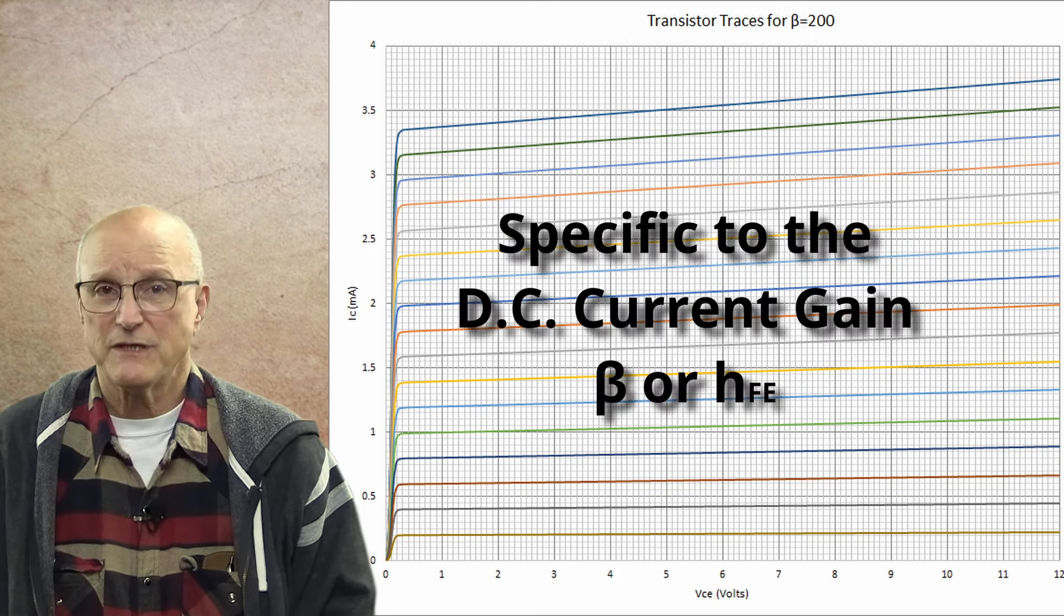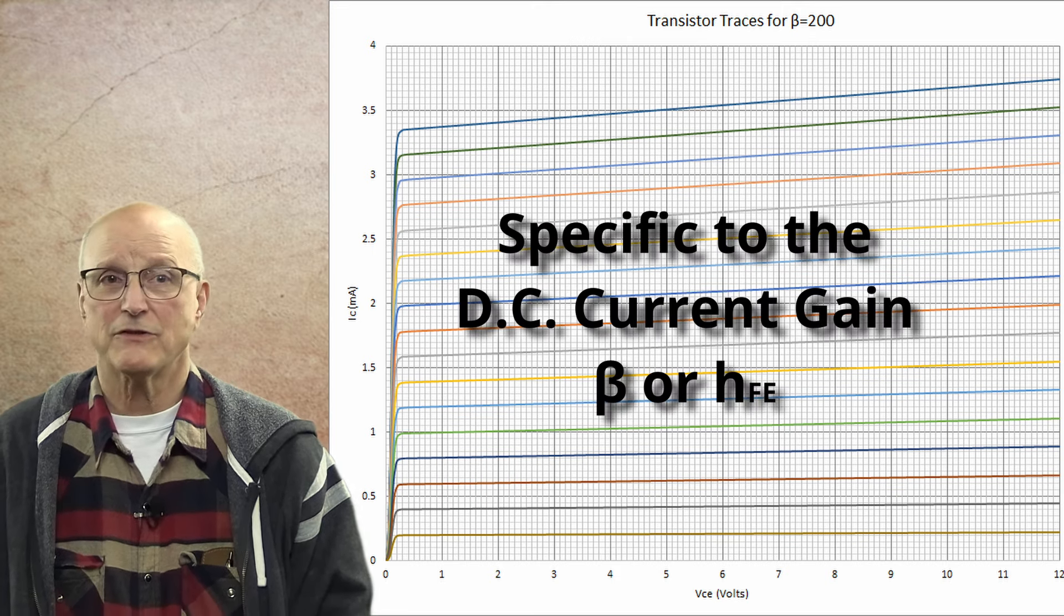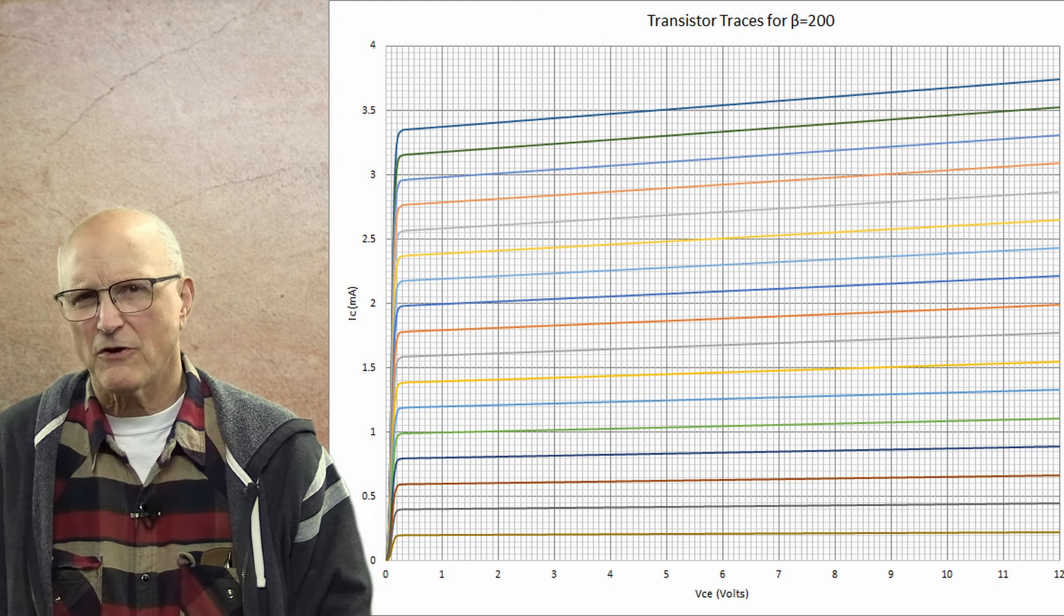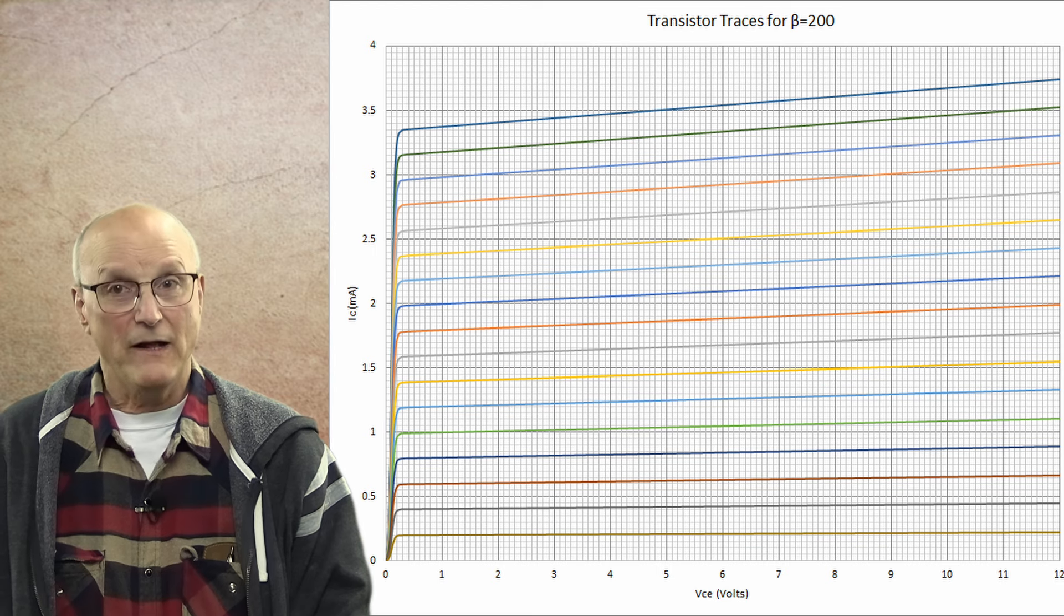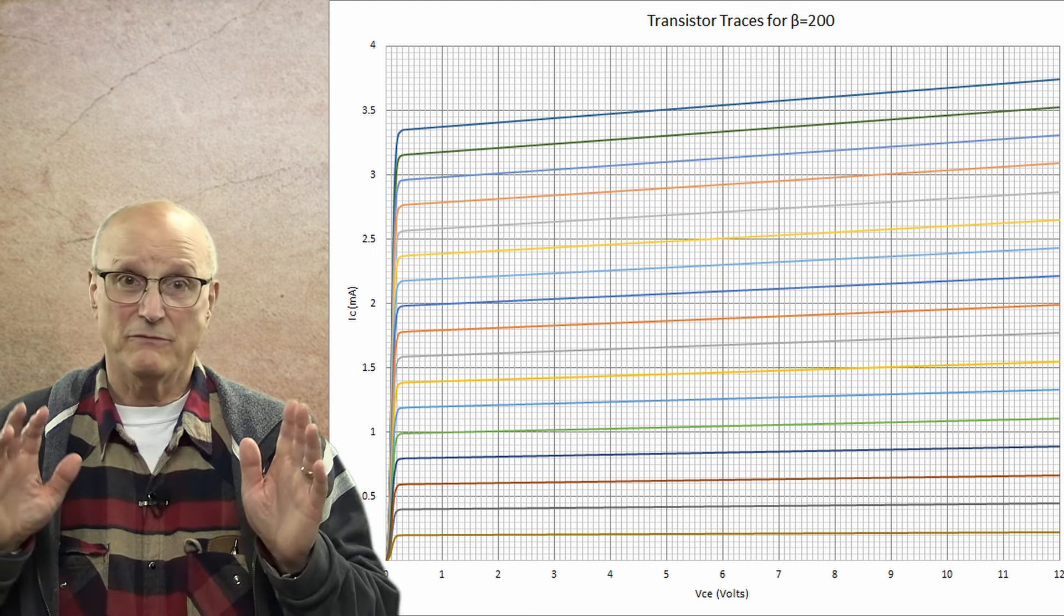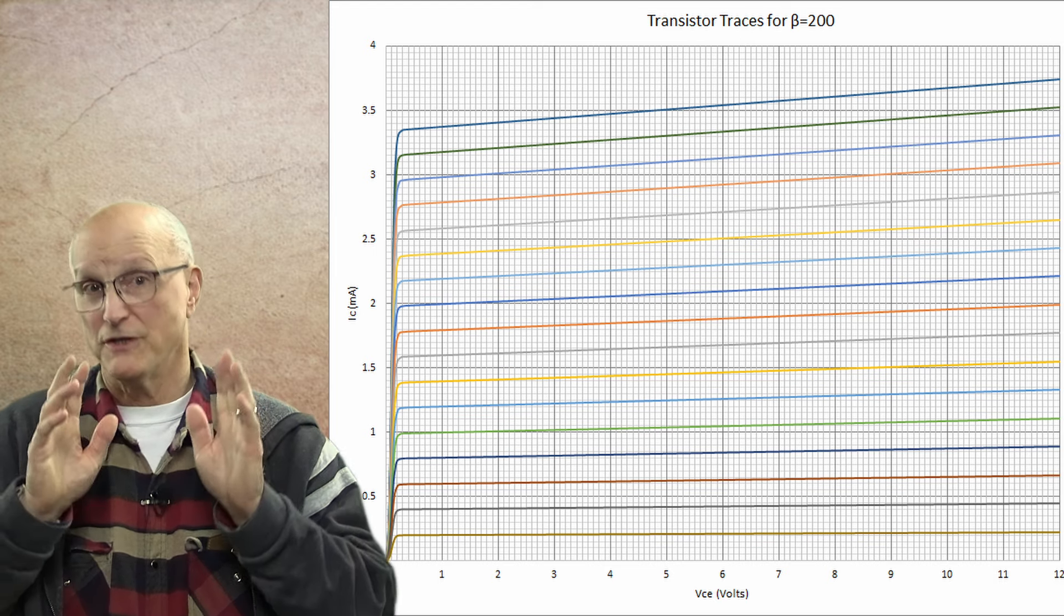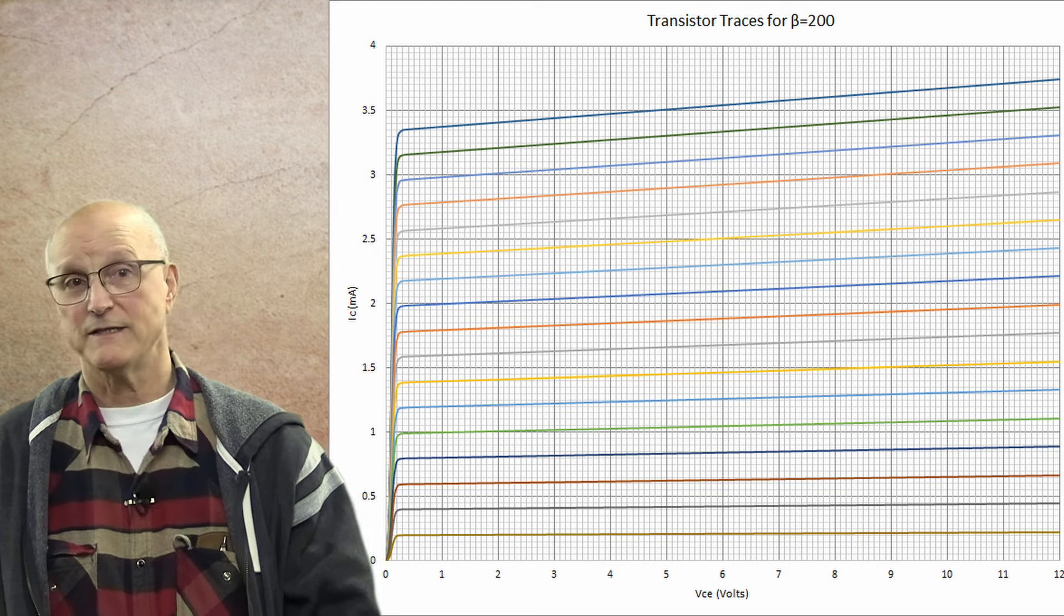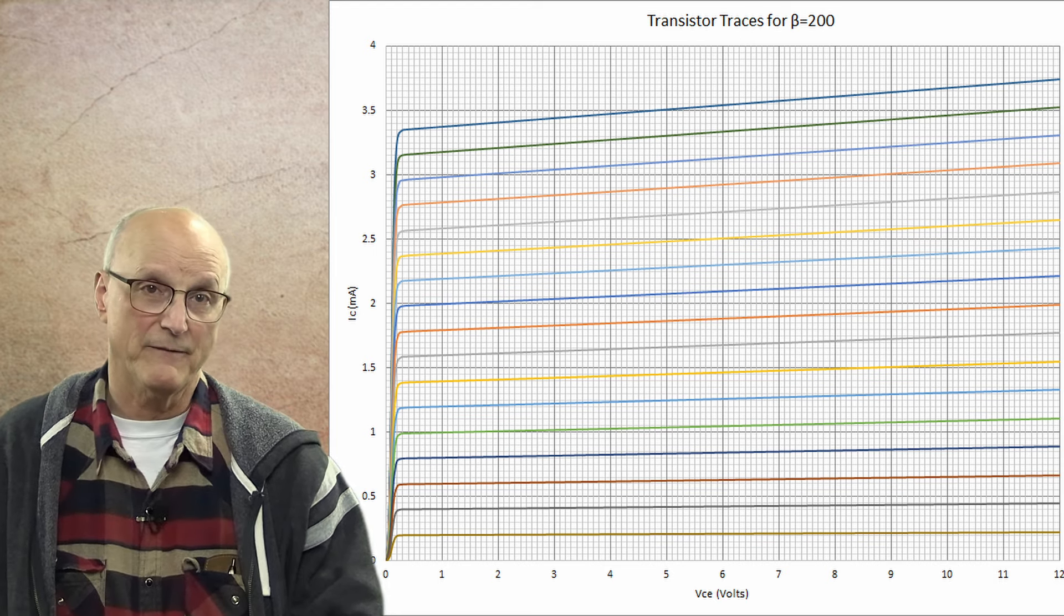As you can guess, this is very specific to the DC current gain in the transistor. With that said, the shapes of the curves do not change, only the values associated with them. So, in general, you can take any generic family of curves and reassign values as needed to accommodate the design that you are working on.